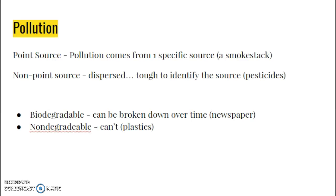In terms of pollution, we're going to talk about point source and non-point source. Point source is where you can point at the source — it comes from one specific spot, like a smokestack. Non-point source comes from a wide area, like runoff from a farm field or a series of farm fields, or runoff from a neighborhood of people treating their lawns. Biodegradable things can be broken down over time, like newspaper and wood. Non-degradable things can't be broken down — that would be things like plastics.